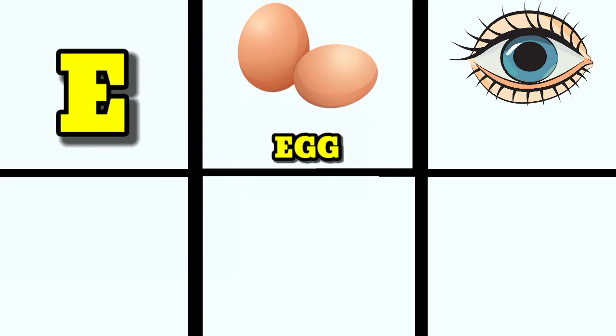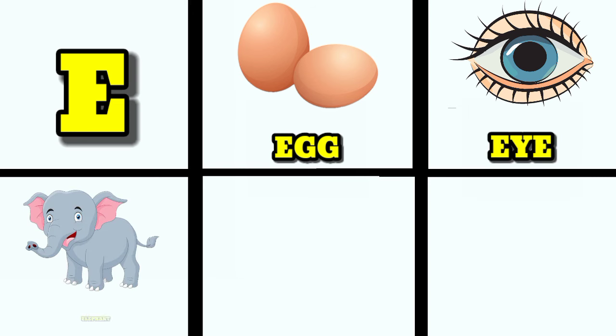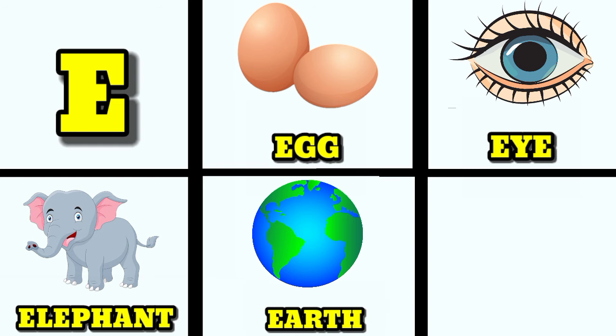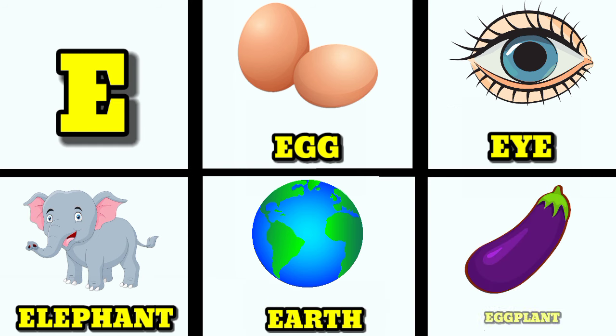E is for egg. E is for eye. E is for elephant. E is for earth. E is for eggplant.